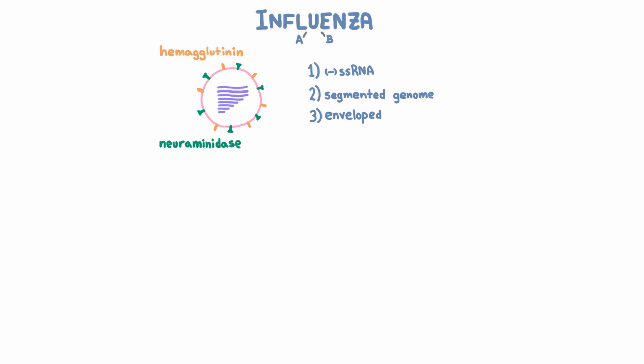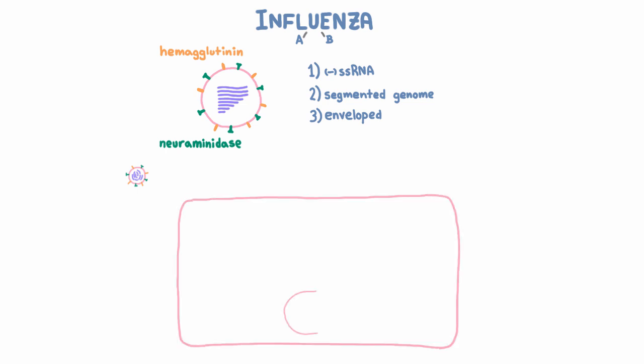So let's talk about how infection works. Starting from the beginning, you get exposed to the virus via respiratory droplets, and the virus then infects epithelial cells in the upper respiratory tract. Hemagglutinin binds to sialic acid on our respiratory epithelial cells.